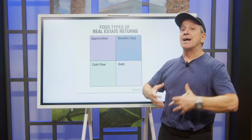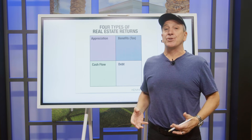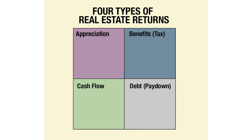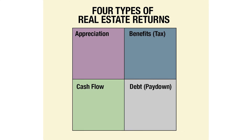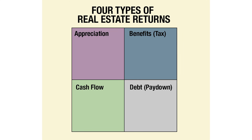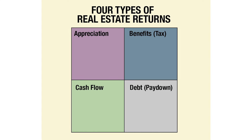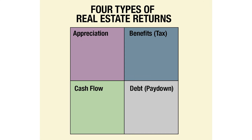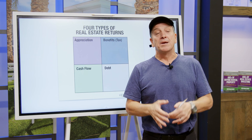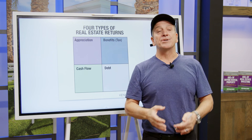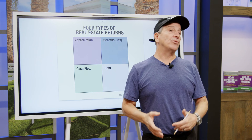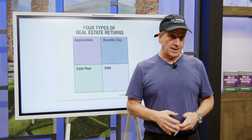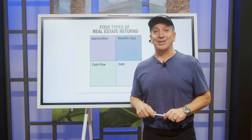Those are the four types of real estate returns — the real estate investment quadrant. These are the four categories you need to pay attention to as you're going out finding deals and raising capital. Each of these four quadrants are going to be very important for you to understand and to grow your financial well-being through real estate. Thank you very much for watching.